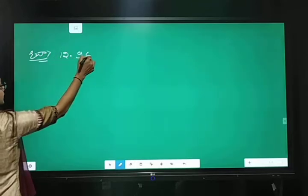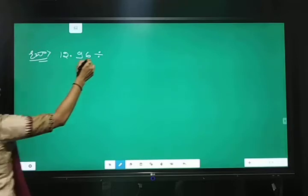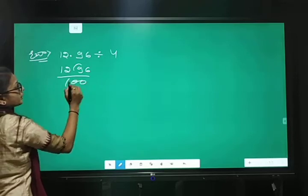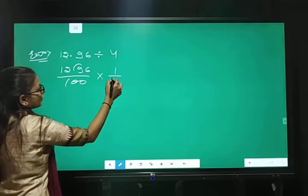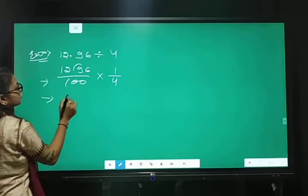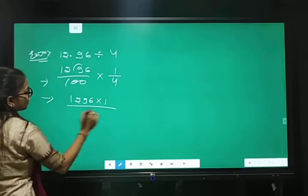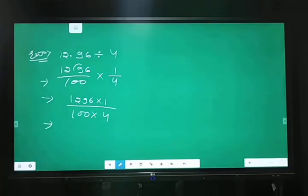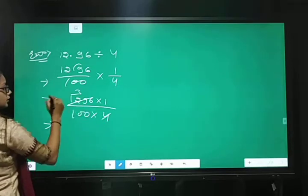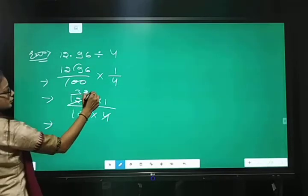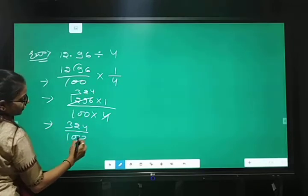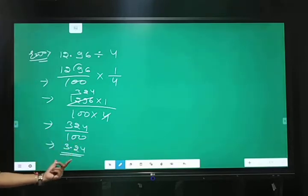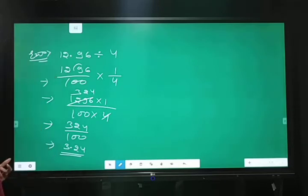Next one more example is 12.96 divided by 4. Remove the decimal point. Denominator me 2.0 a jayenge. And reciprocal the second fraction. 1 upon 4. Multiply by 1 upon 100. Multiply by 4. 3 times 3 and 24. So, answer is 3.24. Denominator me 2.0 a jayenge. So, 2 digit ke baad point jayega. To 3.24 is answer. Clear?